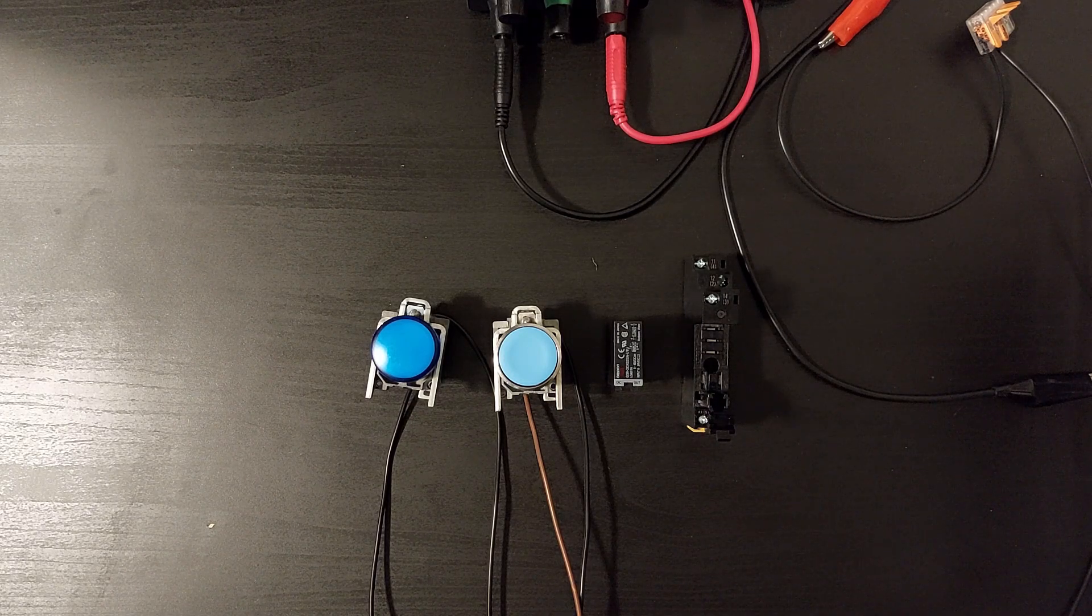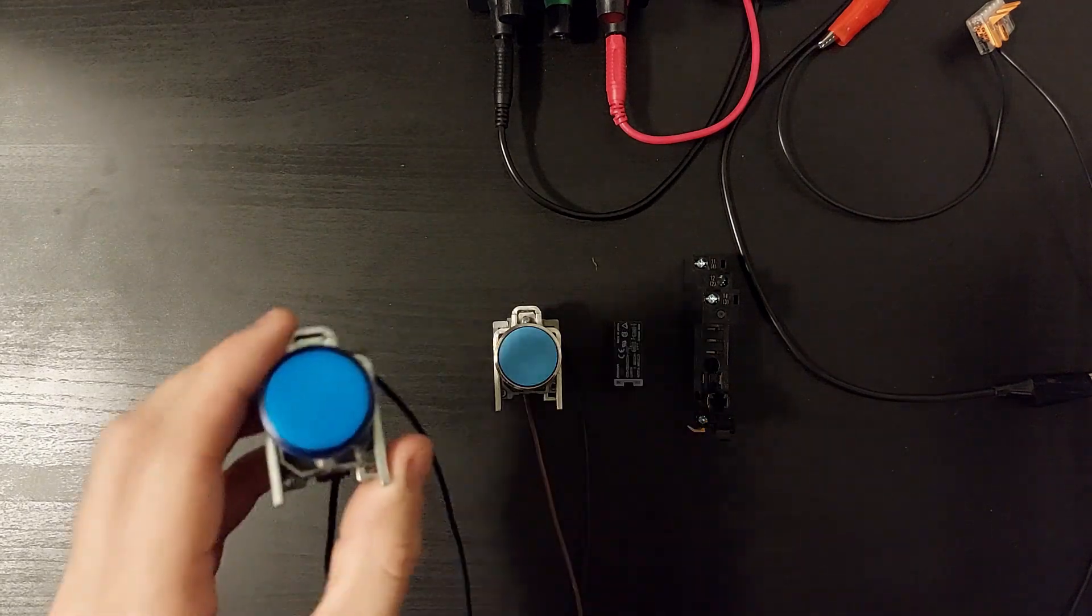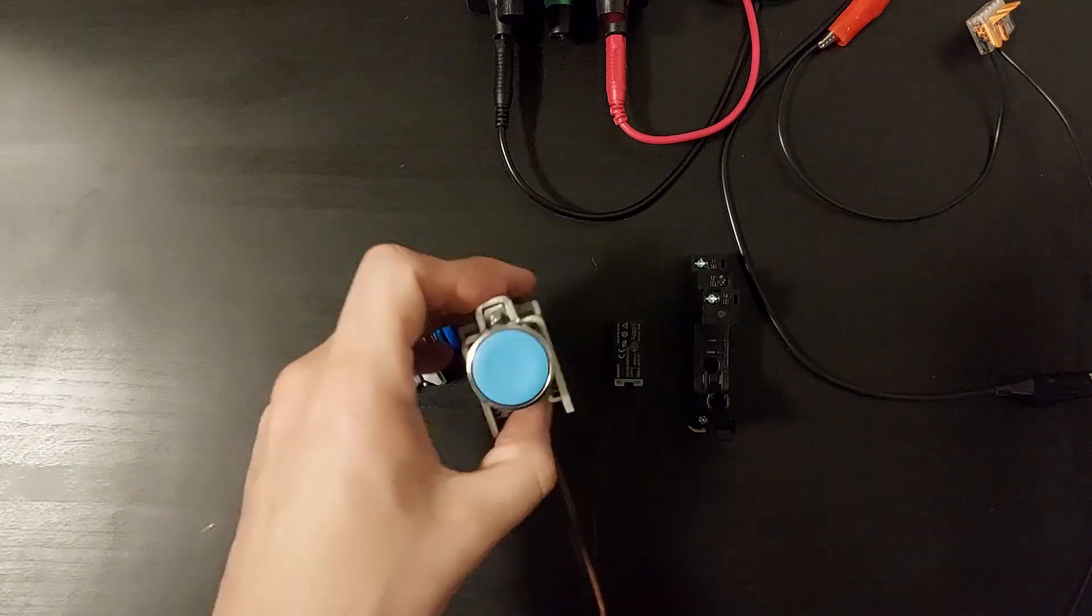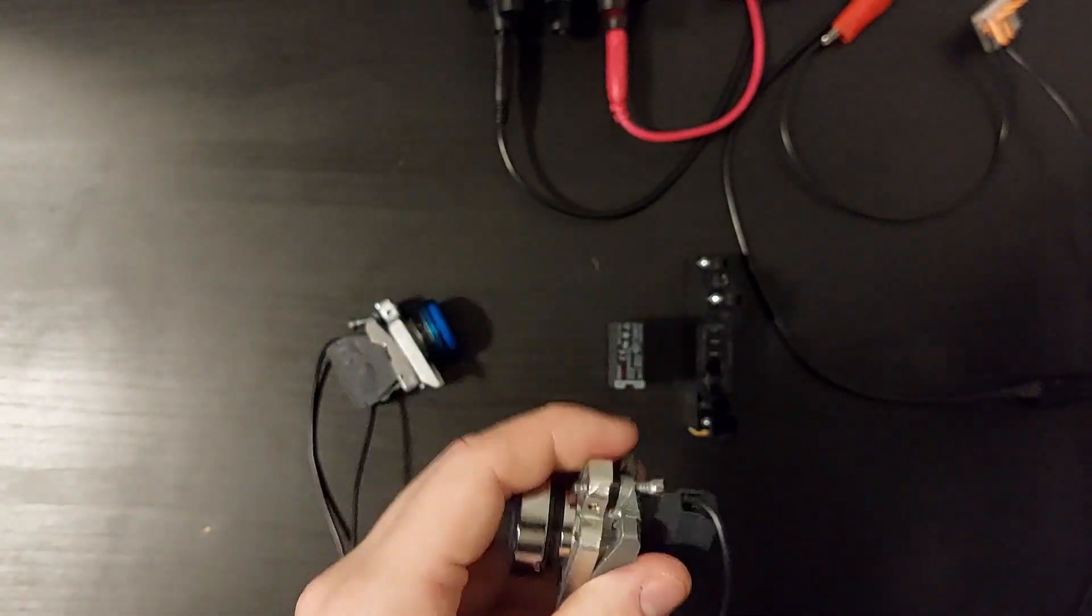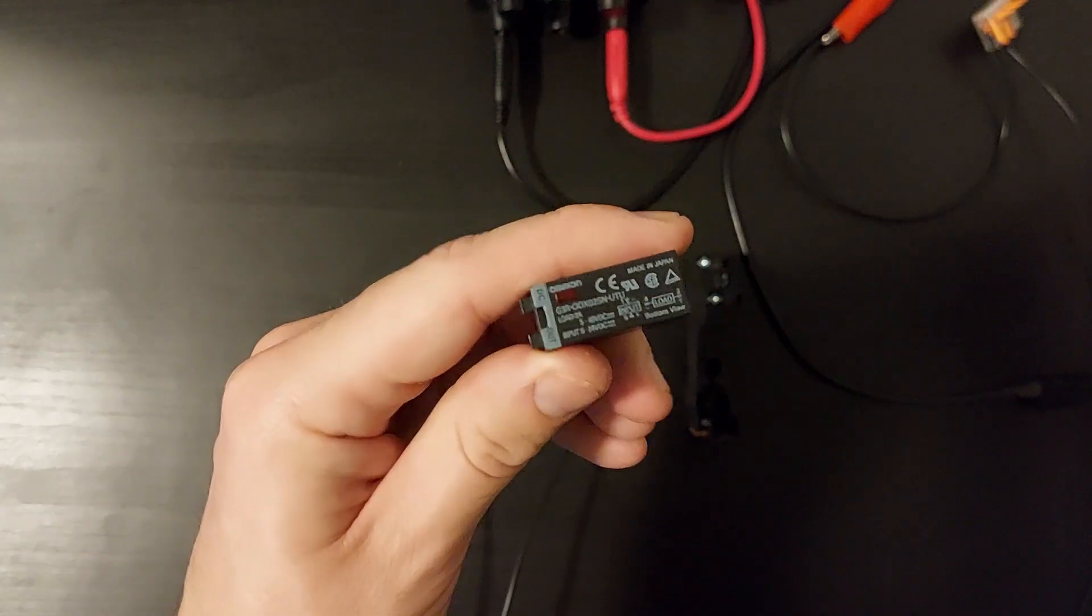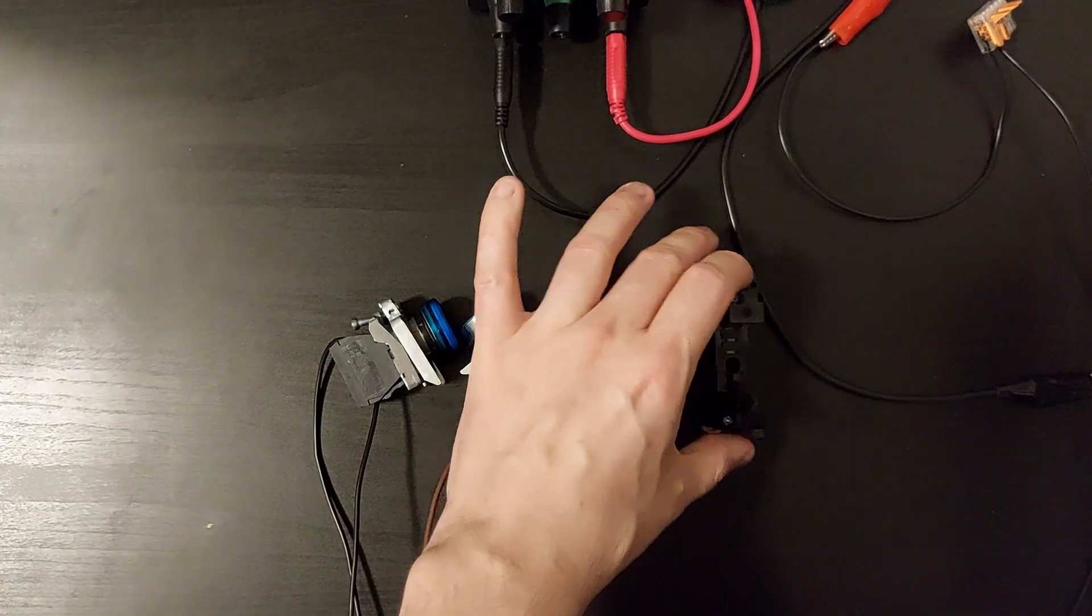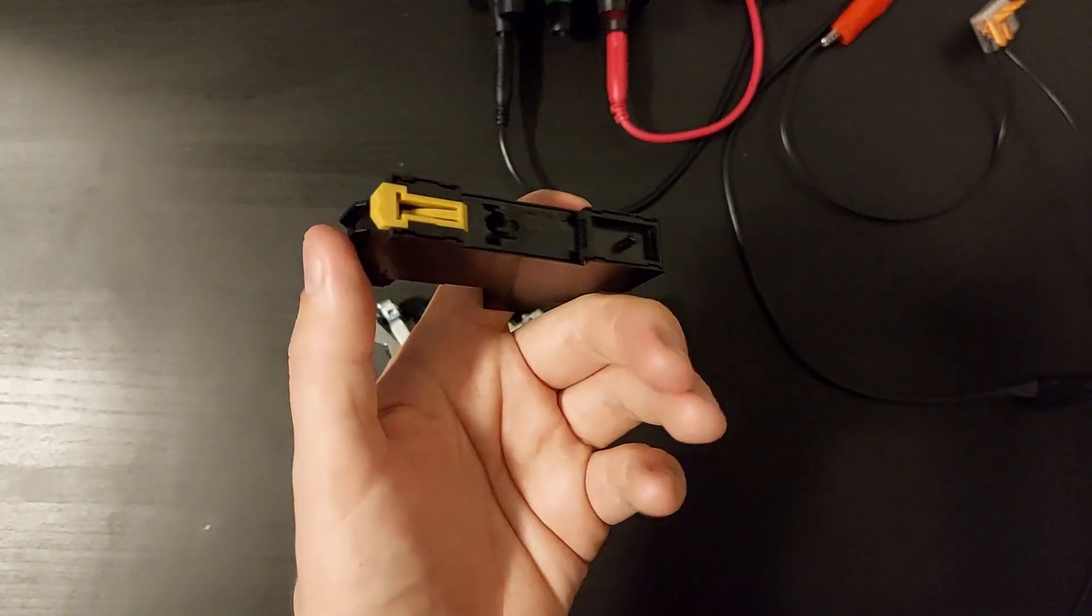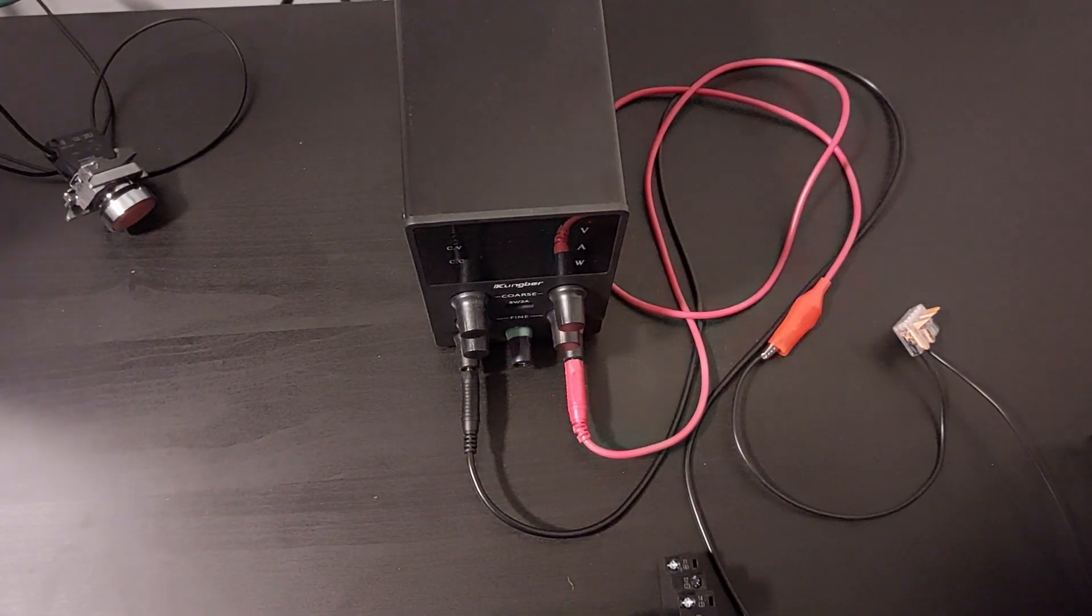These are the components I will be using to demonstrate this video. I got one blue lamp, a button with a normally open contact block, the solid state relay, a relay socket for the relay, and a power supply.